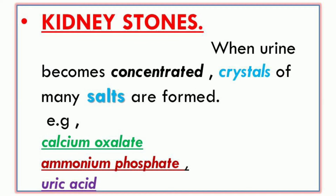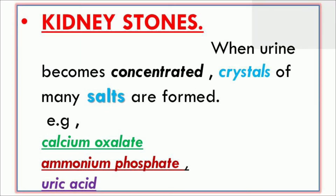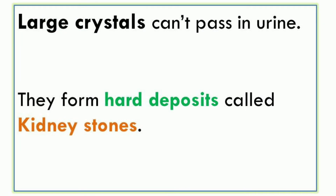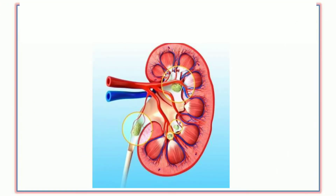جب urine concentrated ہوتا ہے تو crystals بن جاتے ہیں — calcium, oxalate, calcium and ammonium phosphate, and uric acid — یہ crystal کی شکل اختیار کریں گے اور hard deposit بناتے جائیں گے، کیونکہ پانی کی مقدار کم ہے اور urine concentrated فارم میں ہے۔ They cannot pass in urine، اور hard deposit کی شکل اختیار کر جائیں گے اور kidney stones بن جائیں گے، جن کو ہم گردوں میں پتھری کہتے ہیں۔